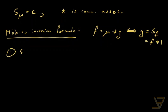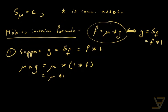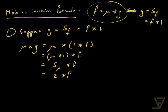The first direction: suppose g = f★1. Then we want to show f = μ★g. Starting with the complicated side, μ★g equals μ★(1★f) by commutativity. By associativity this is (μ★1)★f, which is the summation function of μ, starred with f. That equals ε★f, and since ε is the identity, this is just f, as desired.